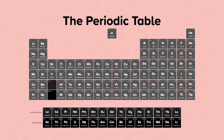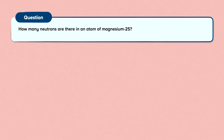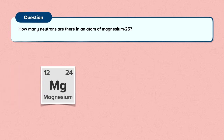You might be given a certain isotope in a question. For example: how many neutrons are there in an atom of magnesium-25? You can use the nuclear symbol on your periodic table to find out how many protons magnesium has. Here is magnesium's nuclear symbol from the periodic table.